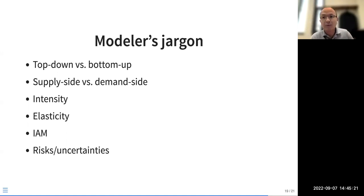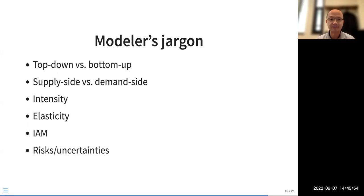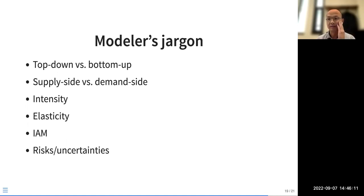Supply side versus demand side — it's very important to be clear about which you're discussing, because their logic is very different. Supply side focuses on different technologies providing lower-carbon services, while demand side talks about energy efficiency and improving quality of service. Intensity is a term describing a ratio — for example, energy intensity is energy consumption per unit of GDP. The less energy consumed to generate the same GDP, the better.